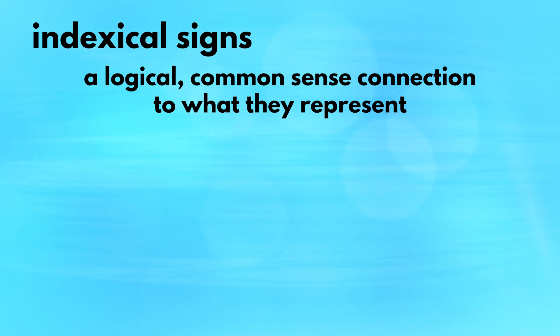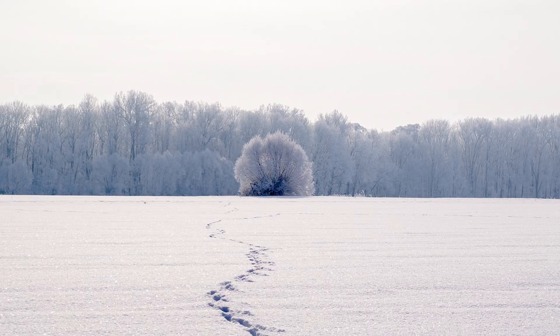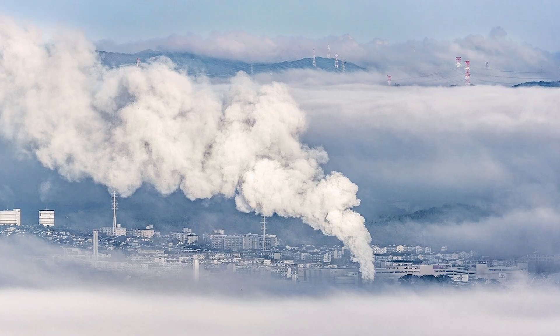Next, indexical signs. Rather than closely resembling something, these signs have a logical, common sense connection to what they represent. So a couple of examples here. First, imagine you're walking outside and you see footprints in the snow. Logically, you can assume that something, probably a human being, recently walked by — that would be an indexical sign. Or you can look up from your window and see thick smoke in the distance indicating fire. In this case, the smoke would be the indexical sign.